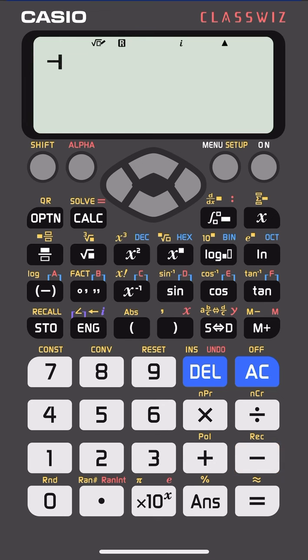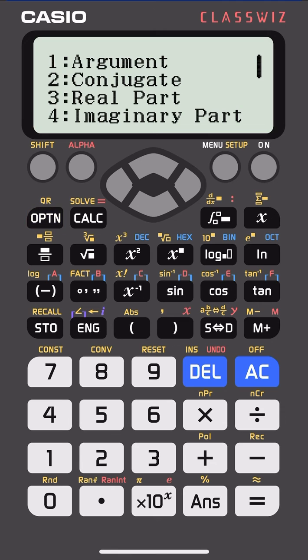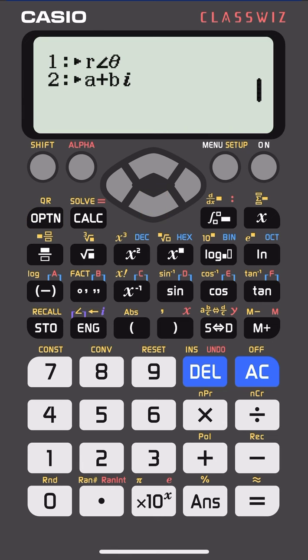Let's say you have a complex number like this: minus three minus five iota. What you do is you press the option button on top left, press down, and you see this option r theta at number one. Select that and press the equal button.